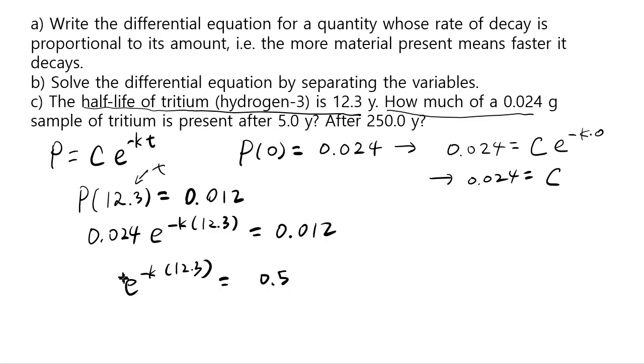And then to get rid of e, ln cancels e. e and ln are inverse functions, so we can do this. And then finally dividing by 12.3, we get that k has to be ln of 0.5 divided by negative 12.3.